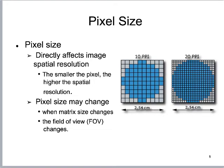Pixel size changes when the matrix size changes. Illustrated here on the right, we have a matrix of 10 by 10 on the left versus a matrix that's 20 by 20. The 20 by 20 matrix has much smaller pixels — so though the matrix is larger, the pixels are much smaller.